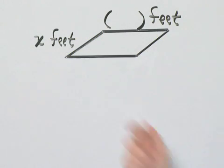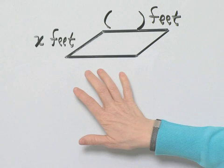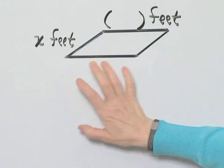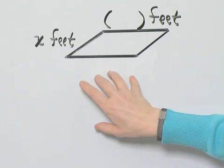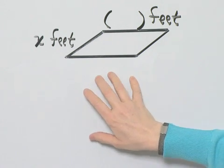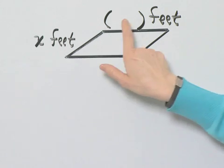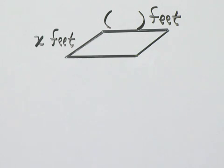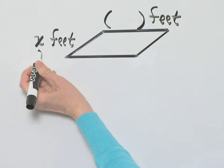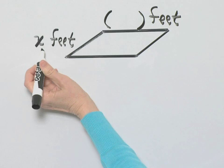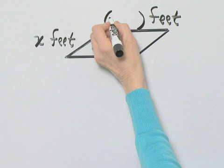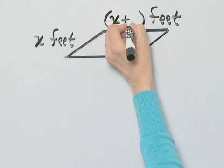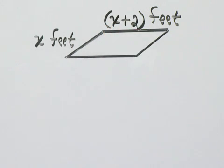Notice we do have this figure. Remember our steps for problem solving? Make sure you understand this problem by reading and rereading the problem. Remember the dimensions are two consecutive even integers, so if this is x feet and this is an even integer, the next even integer is x plus 2 feet.